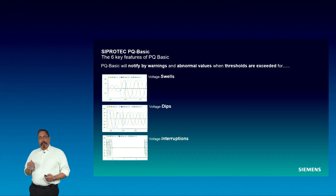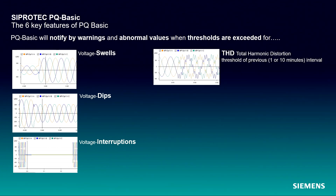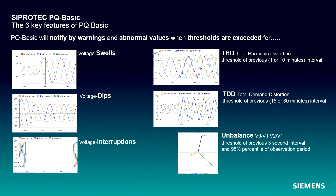Furthermore, observation intervals are provided for the total harmonic distortion (THD), the total demand distortion (TDD) — the ratio of the harmonic content expressed as a percent of the maximum demand current — and last but not least, the voltage unbalance.